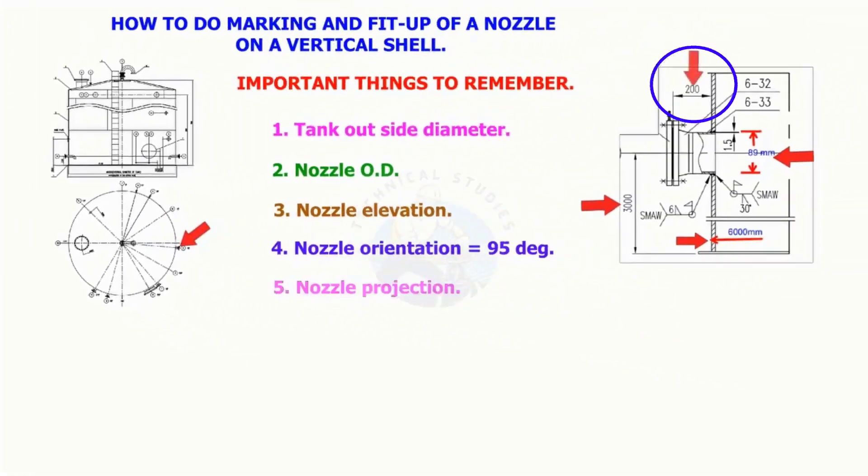Nozzle projection from the shell, shell thickness, in this case 10 millimeters, root gap, and type of beveling.